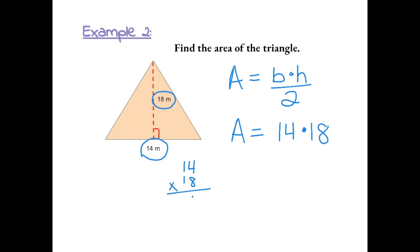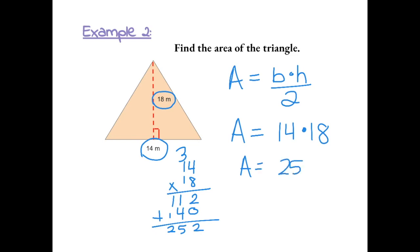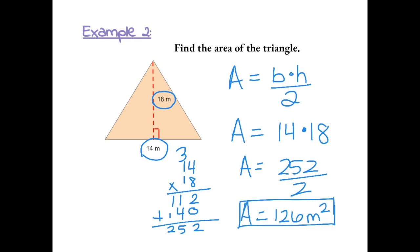8 times 4 gives us 32. 8 times 1 is 8, plus 3 is 11. Add a 0. 1 times 4 is 4, and 1 times 1 is 1. This gives us 252. Now to find the total area, we do 252 divided by 2, so the area of this triangle is 126 meters squared.